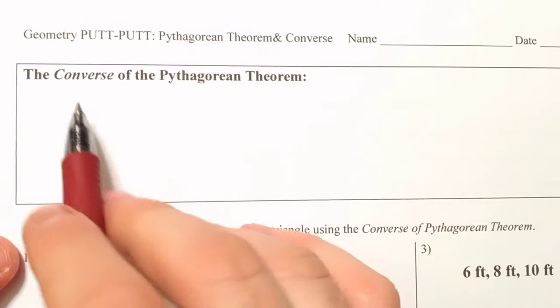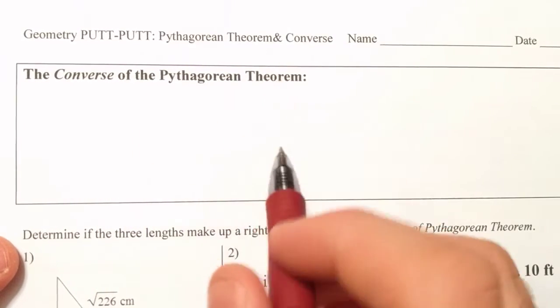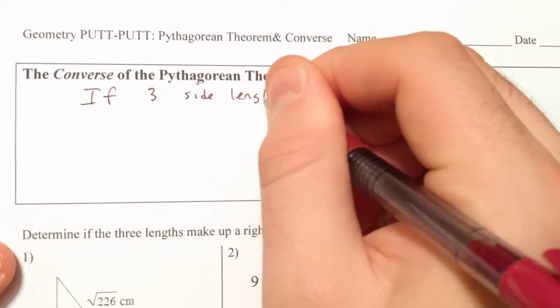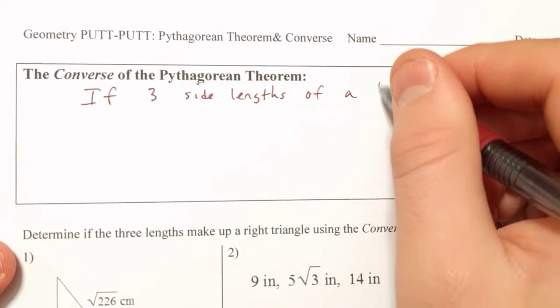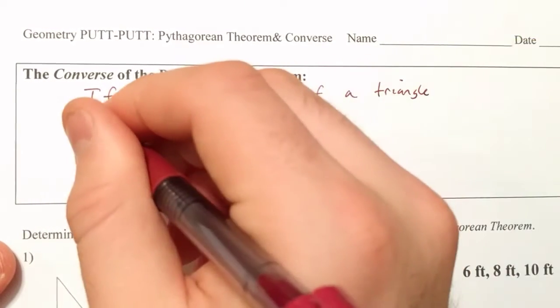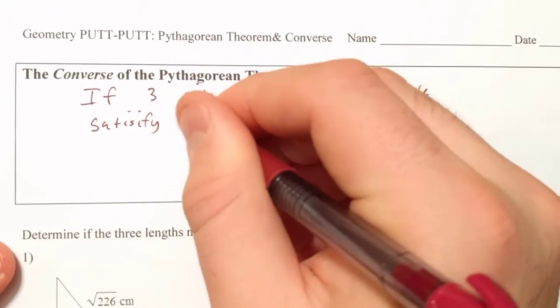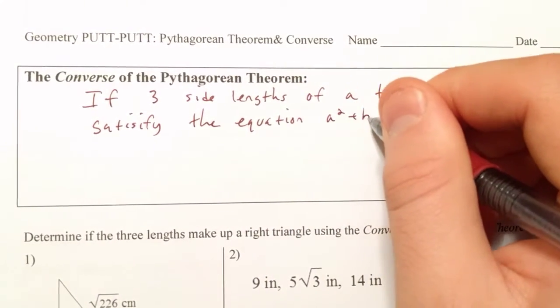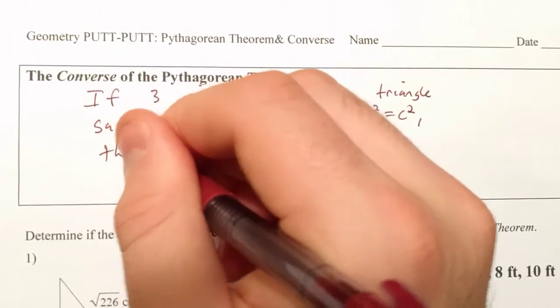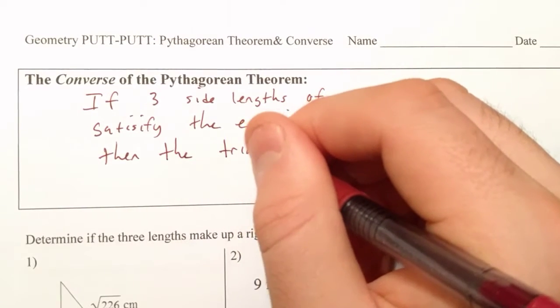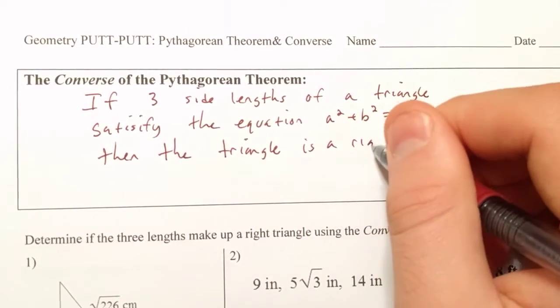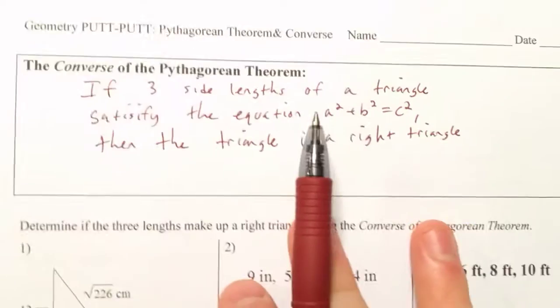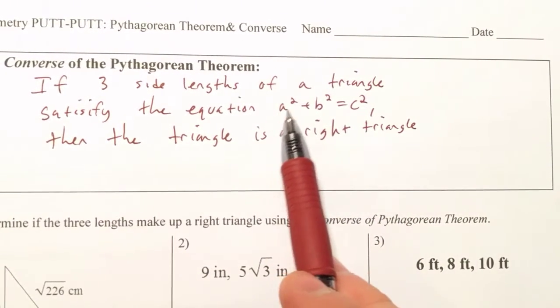The second objective is the converse of the Pythagorean theorem. And what this says is, if three side lengths of a triangle satisfy the equation A squared plus B squared equal to C squared, then the triangle is a right triangle. So when we say converse, we mean the exact reverse of the original statement. So the original statement was, if you had a right triangle, this relationship exists. A squared plus B squared equals C squared.